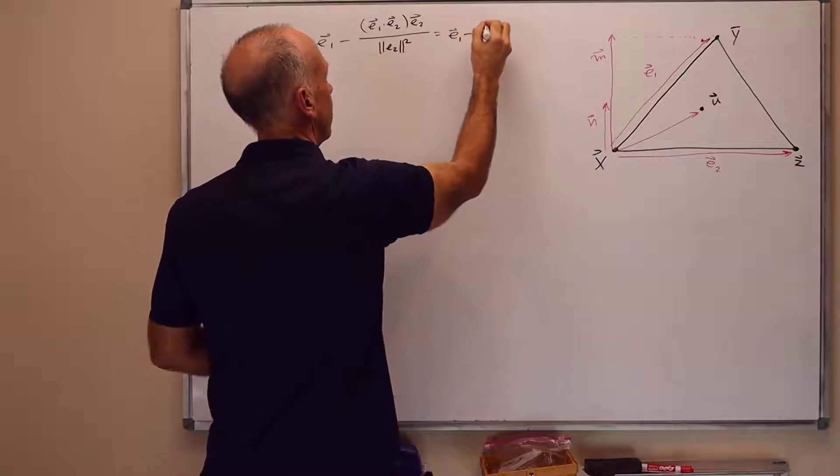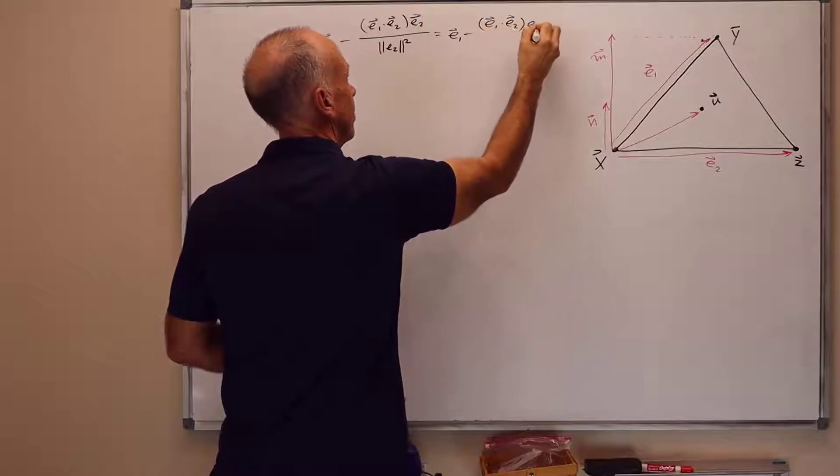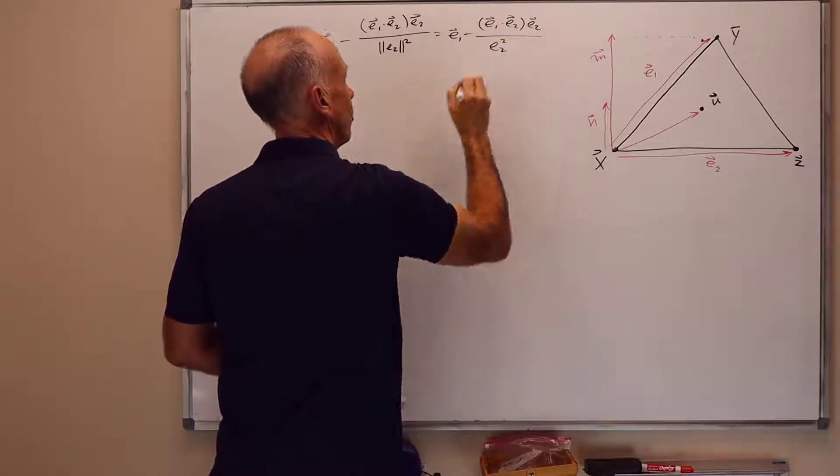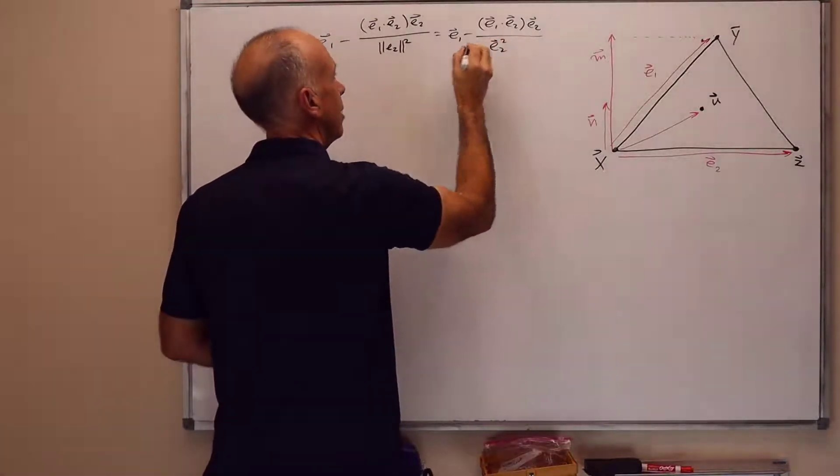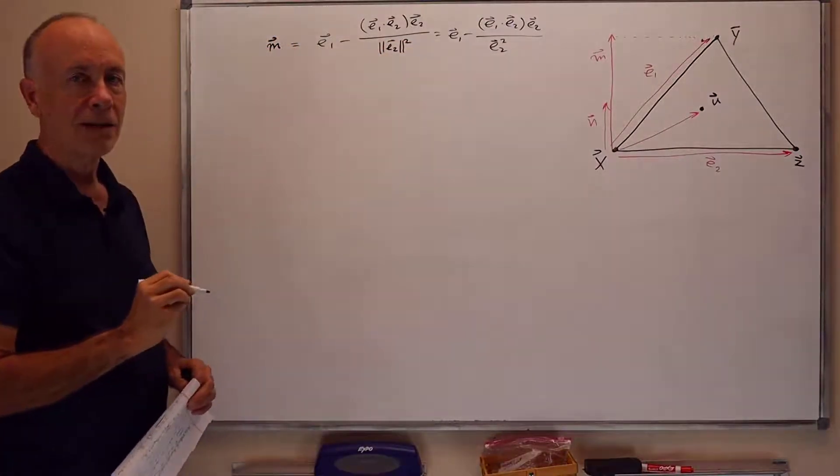We'll also write that in the notation e1 minus e1 dot e2 times e2 over e2 squared. Just to remind you, e2 squared means e2 dot e2, which is the magnitude of e2 squared.